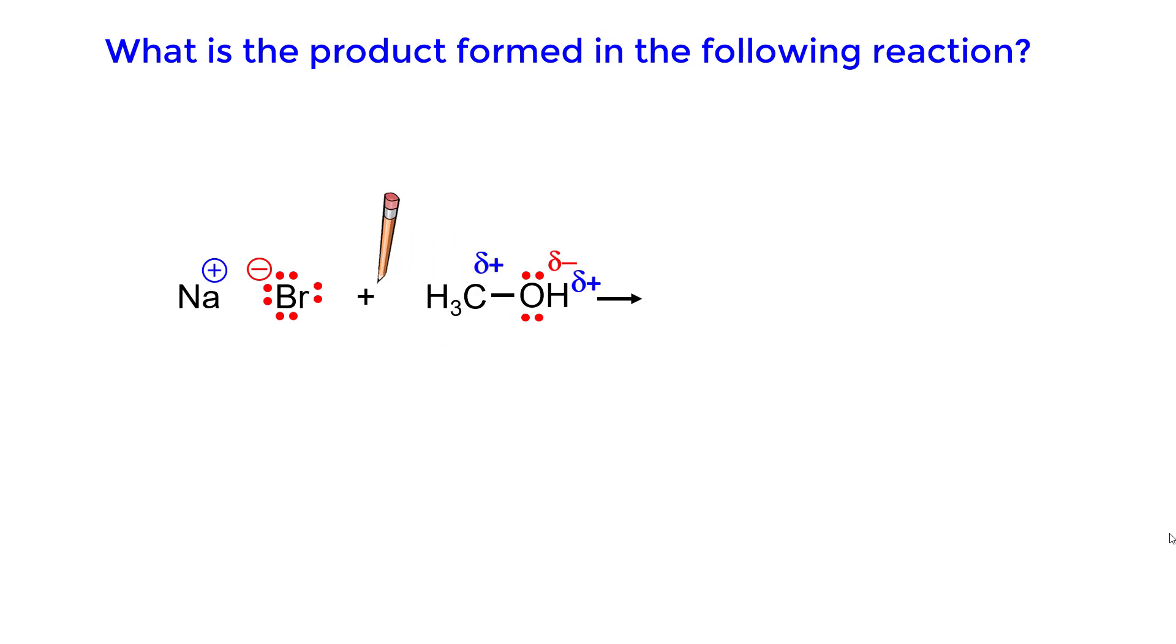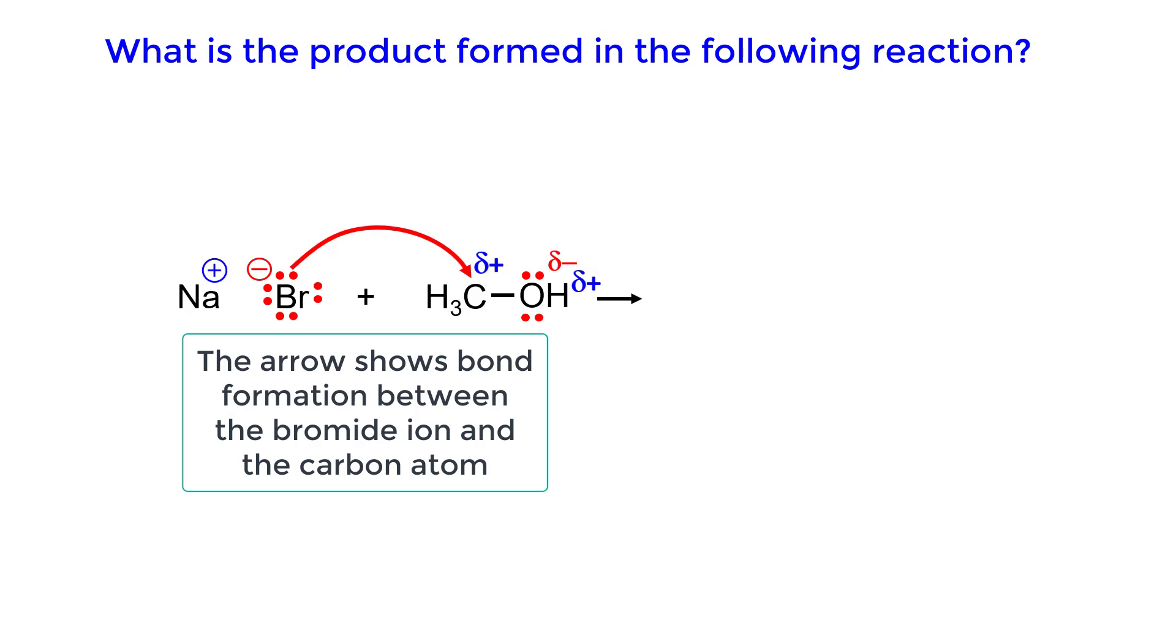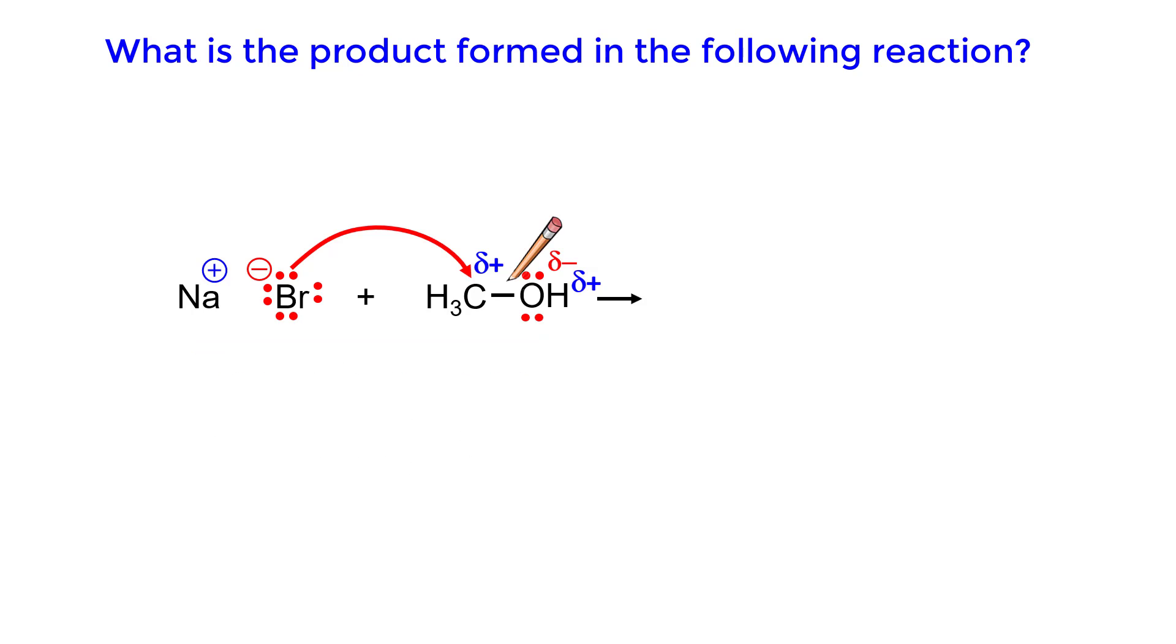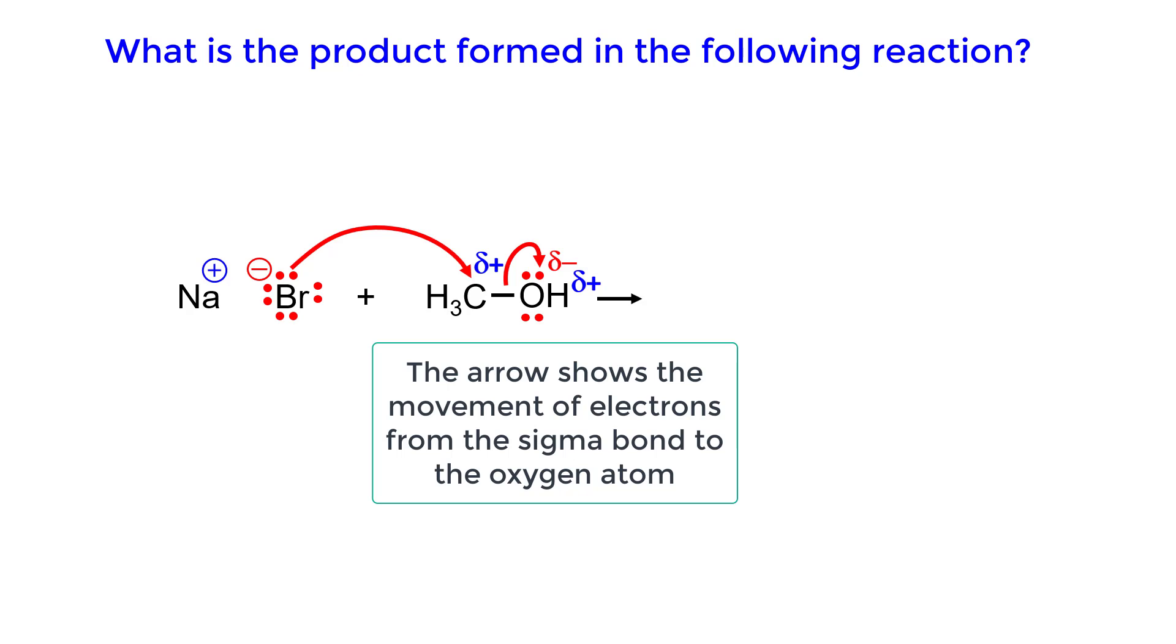Now negative goes to positive. Draw an arrow from the negatively charged bromide ion to the partially positively charged carbon. This shows bond formation between the bromide ion and the carbon. Also draw an arrow from the carbon-oxygen-sigma bond to the oxygen atom. This shows the movement of electrons from the sigma bond to the oxygen atom.